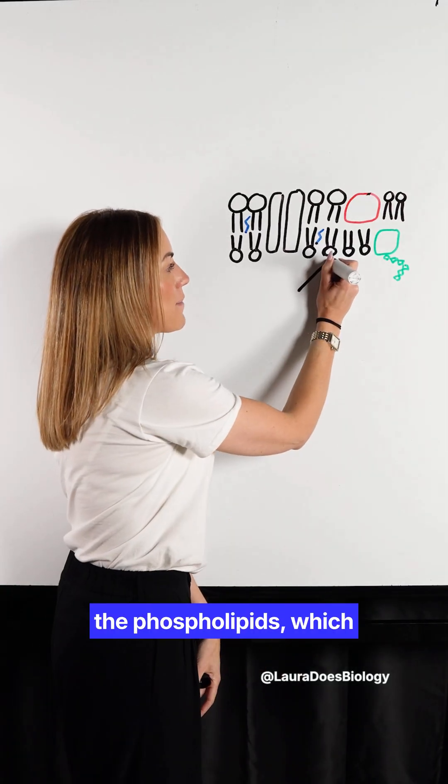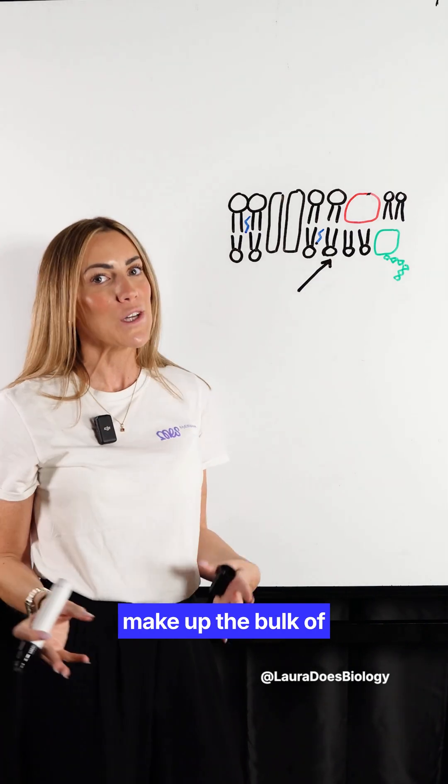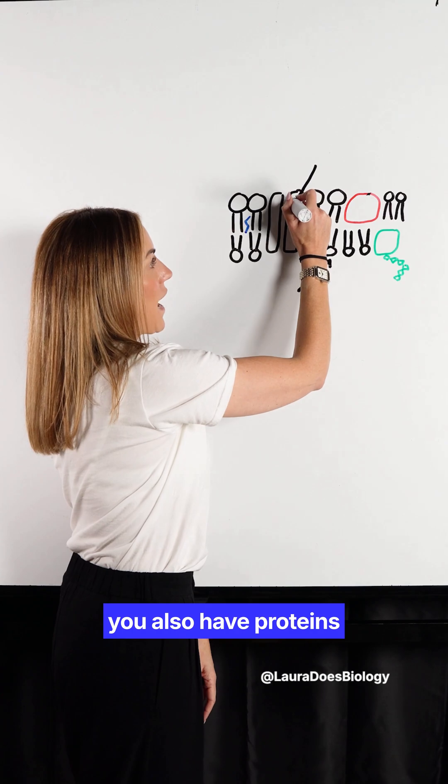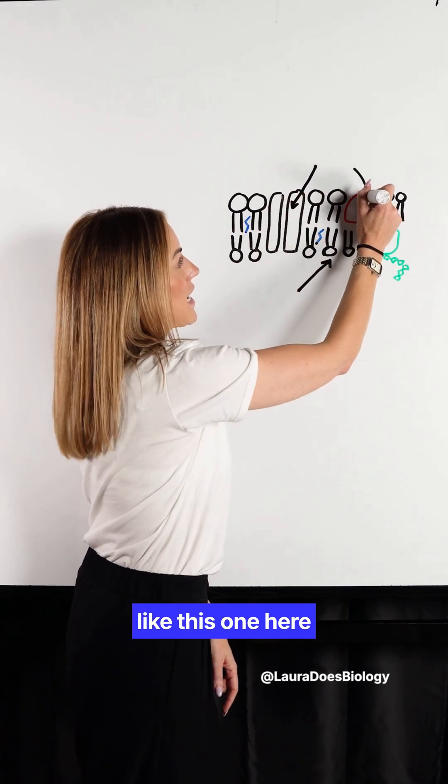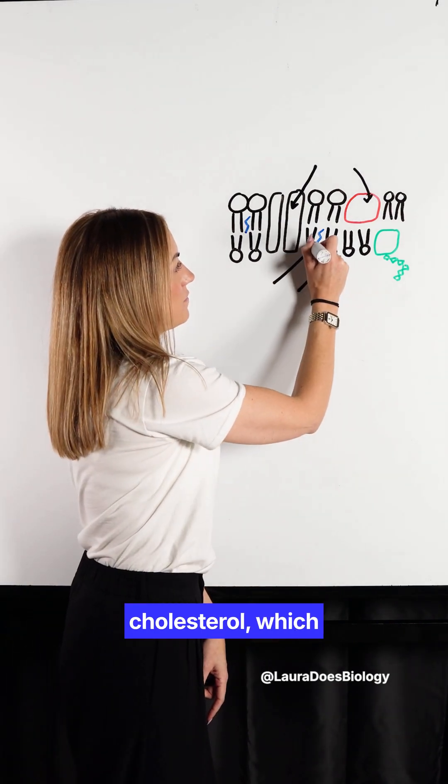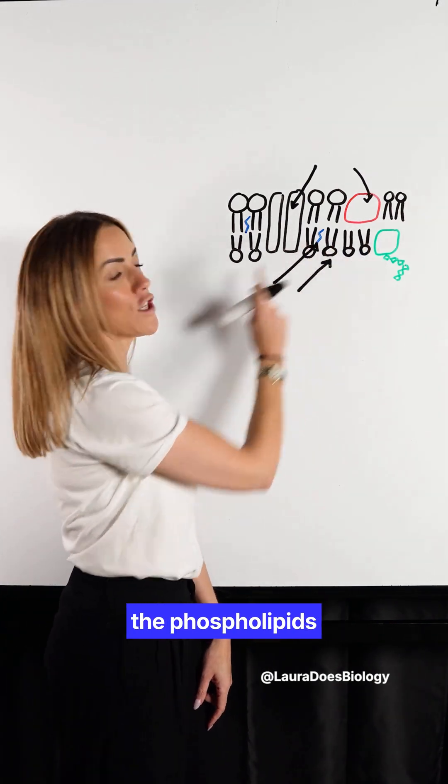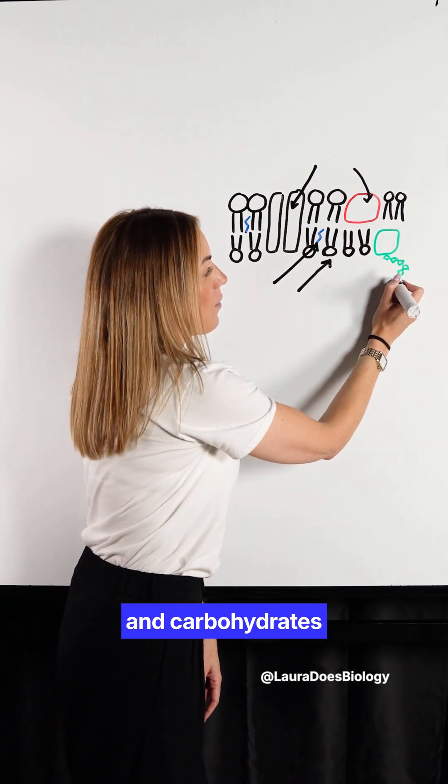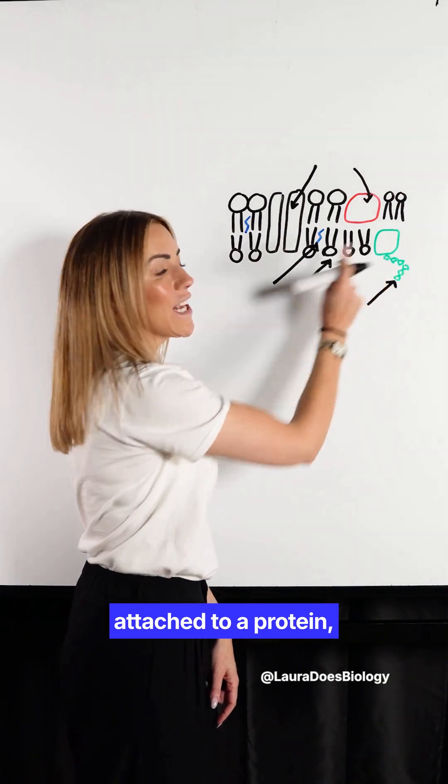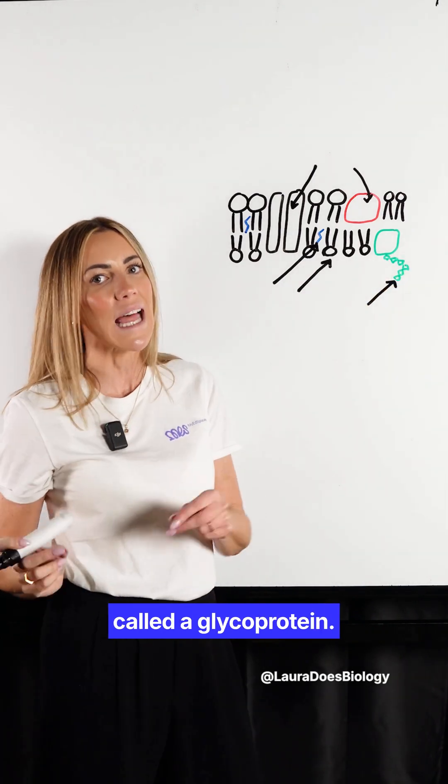So we have the phospholipids which make up the bulk of the cell membrane, but embedded within those phospholipids you also have proteins like this one here and this one here. We've also then got cholesterol which is embedded between the phospholipids and carbohydrates. Like here we can see a carbohydrate chain attached to a protein, so that would be called a glycoprotein.